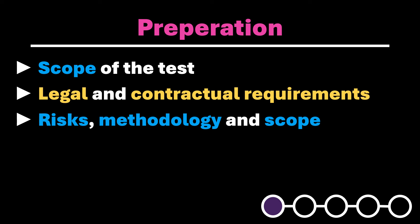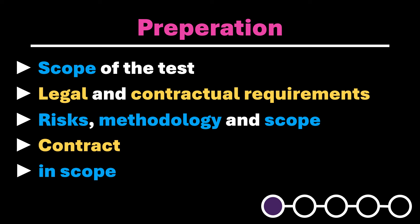Therefore, agreements and arrangements made during this preparation phase should be documented in a contract to prevent misunderstandings and provide a clear basis for the Pentest that both parties can refer to. In the context of a bug bounty program, the Pentester, referred to as a bug bounty hunter, typically does not personally interact with organizational representatives. Instead, they consult the specific bug bounty guidelines, which clearly outline allowed and unallowed actions. Activities considered in scope are allowed, whereas out-of-scope activities, such as social engineering or DDoS attacks, are typically prohibited.